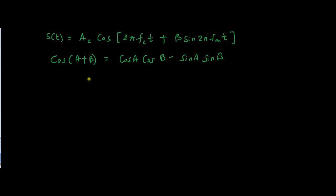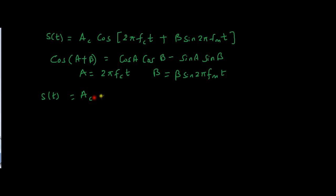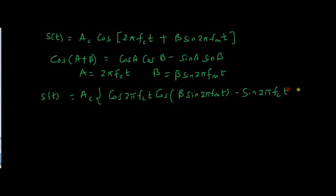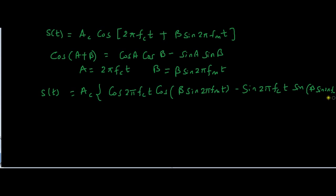Here, a = 2π fc t and b = β sin(2π fm t). So s(t) becomes: Ac [cos(2π fc t)·cos(β sin(2π fm t)) − sin(2π fc t)·sin(β sin(2π fm t))]. This is the expanded form of the FM signal using the trigonometric identity, and for narrow band signals we now apply approximations.